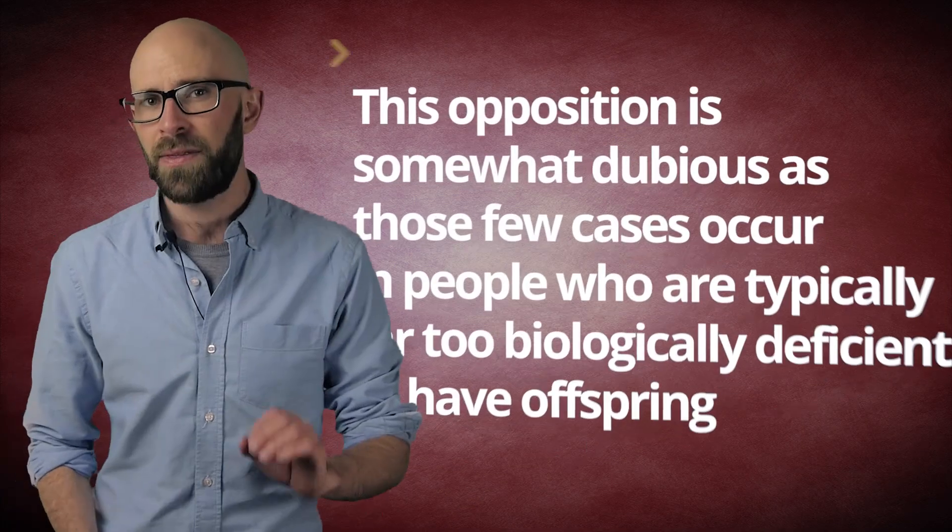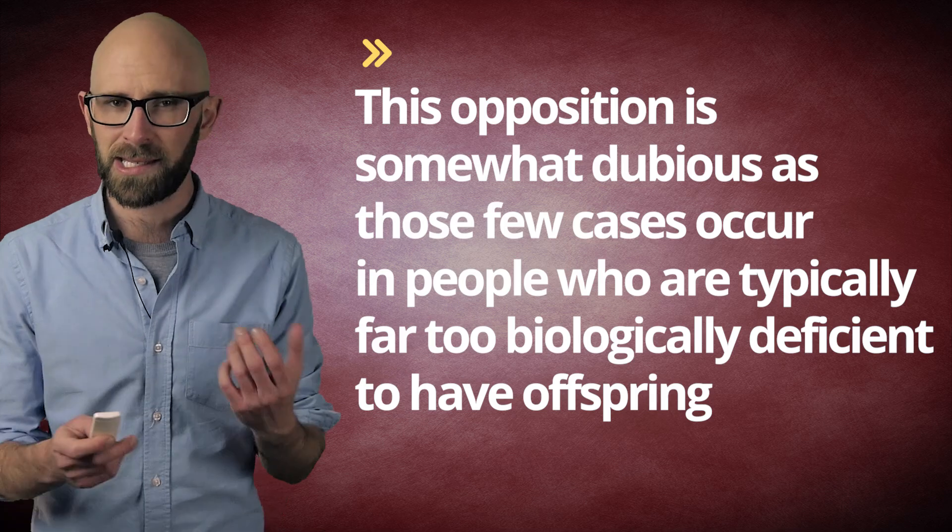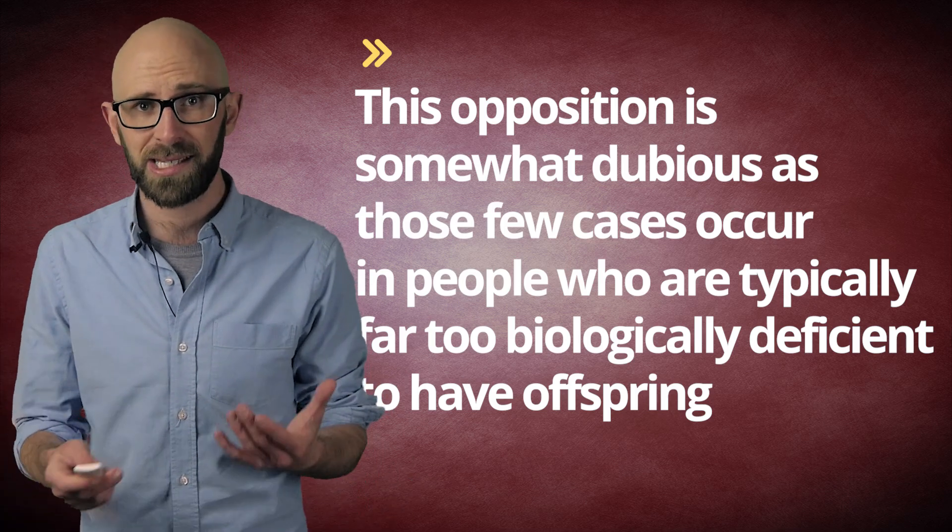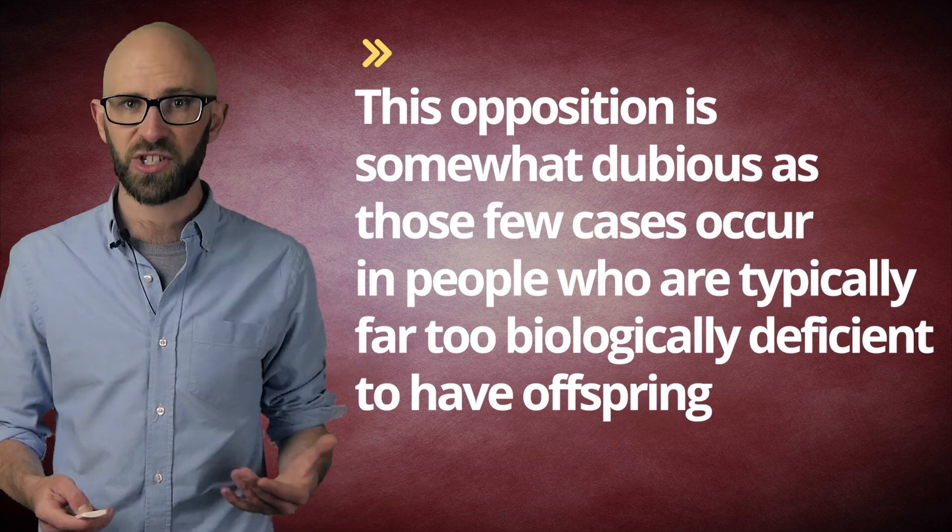However, there have been a few rare cases in which mitochondrial DNA was found recombined from both parents. Some skeptics of the mitochondrial Eve theory use this to cast doubt on the hypothesis. This opposition is somewhat dubious, as those few cases occur in people who are typically far too biologically deficient to have offspring. Thus, the prevailing assumption is that these unfortunate people have something seriously wrong with their DNA and the abnormal recombination of mitochondrial DNA will never get into the human population because of it.